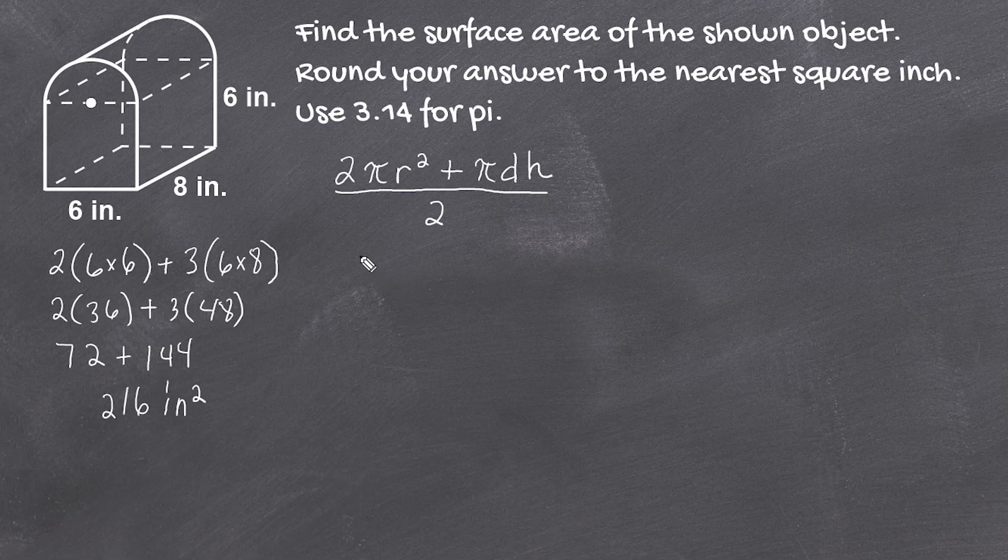Let's substitute the radius, diameter, and height values. We're going to start by solving in terms of pi, and at the end we'll substitute pi with 3.14.